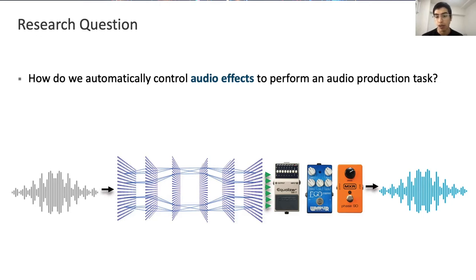For example, we explore whether a neural network can write parameter automation to make effects easier to use and more powerful, as we will show you later on.